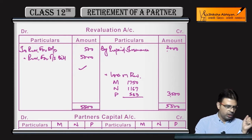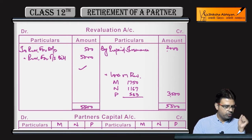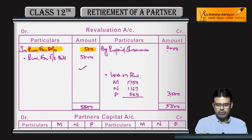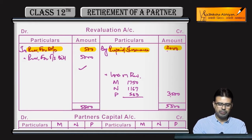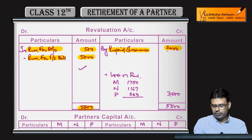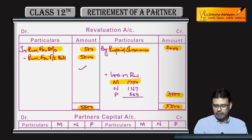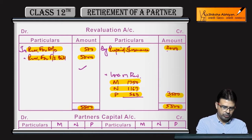Investment loss charged to Investment Fluctuation Fund. Provision for doubtful debts — 500 rupees loss. Prepaid insurance 2,000 — show as income (gain). Provision for outstanding bills — 5,000 loss. Total loss: 5,500. Total gain: 2,000. Net loss: 3,500. This net loss of 3,500 is distributed among M, N, and P in their ratio of 3:2:1.